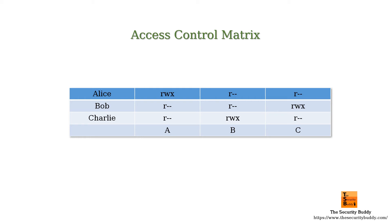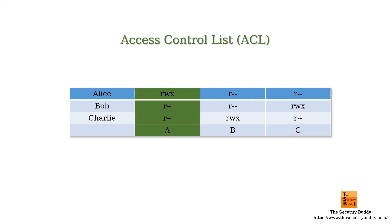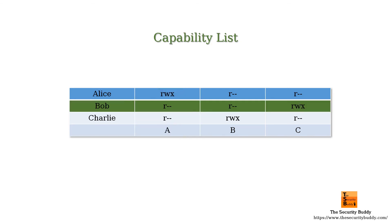If we partition the access control matrix by columns, we have permissions associated with a single resource — in other words, we get a list of access control lists. And if we partition the access control matrix by rows, we get a list of access rights of a user; we call this list a capability list.